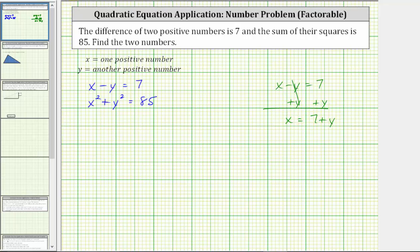So now we know the equation x minus y equals seven is equivalent to the equation x equals seven plus y. And since the equation is now solved for x, we can substitute seven plus y for x in the second equation.